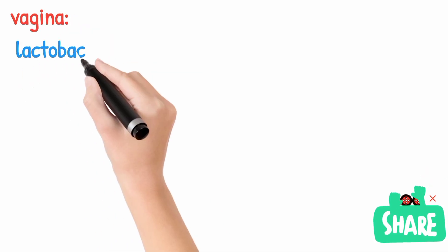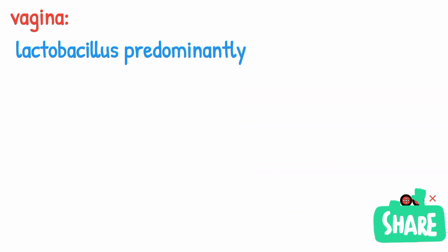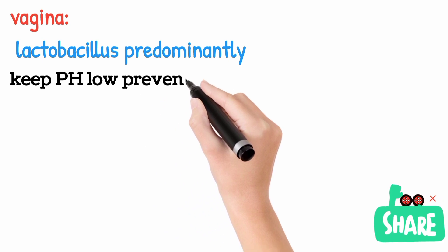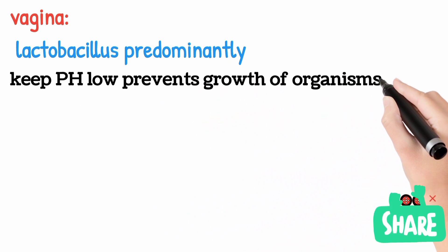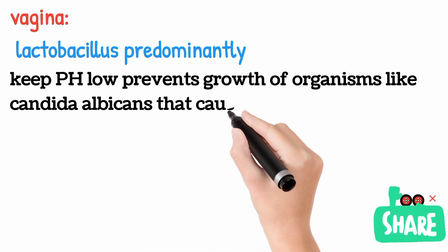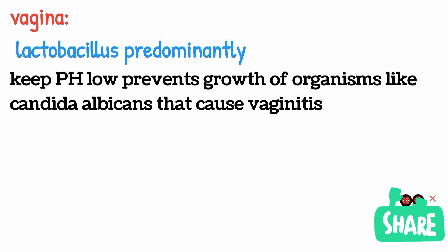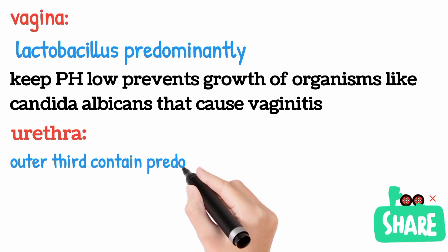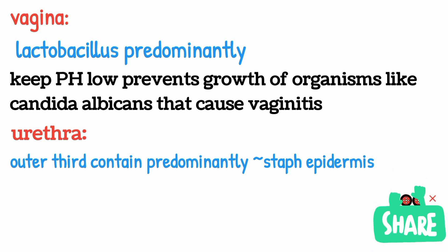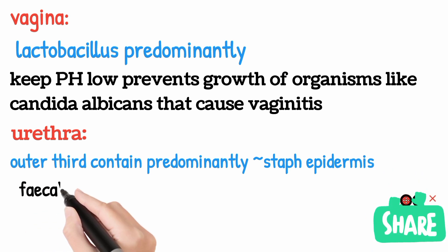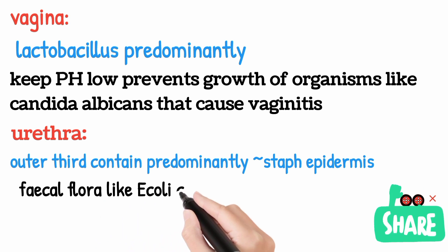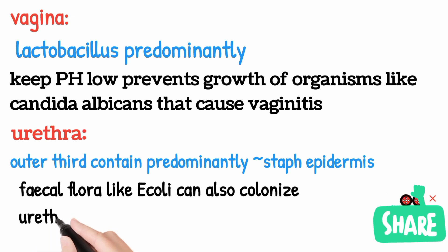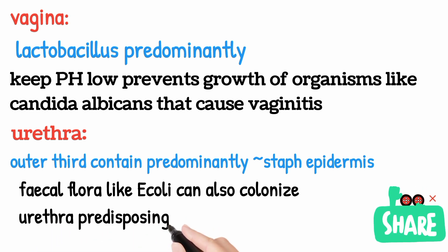In the vagina, Lactobacillus predominates. It keeps the pH low, which prevents other organisms — usually Candida albicans — from invading the vagina. In the urethra, the outer third predominantly contains Staphylococcus epidermidis. The urethra can also be colonized by fecal flora like E. coli, which is mainly present in the colonic region — E. coli can invade the urethral region by colonization.